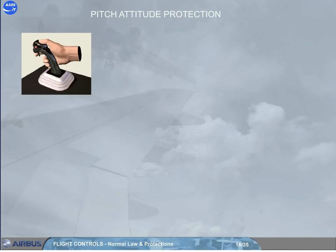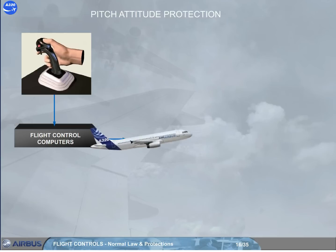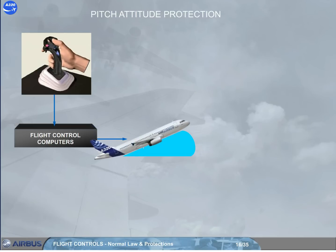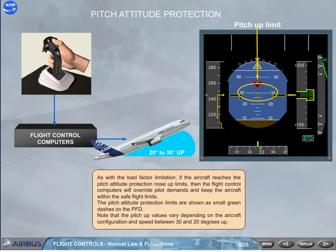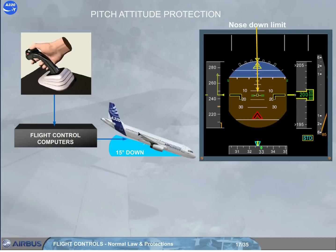As with load factor limitation, if the aircraft reaches the pitch attitude protection nose-up limits, the flight control computers will override pilot demands and keep the aircraft within safe flight limits. The pitch attitude protection limits are shown as small green dashes on the PFD. Note that the pitch-up values vary depending on aircraft configuration and speed, between 30 and 20 degrees up. The nose-down limit is at 15 degrees.